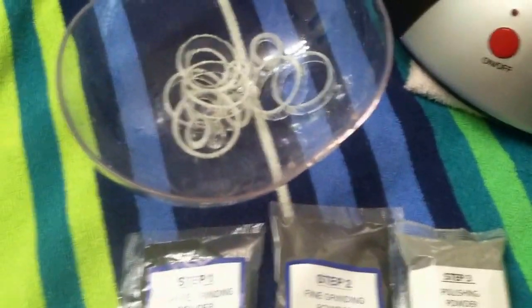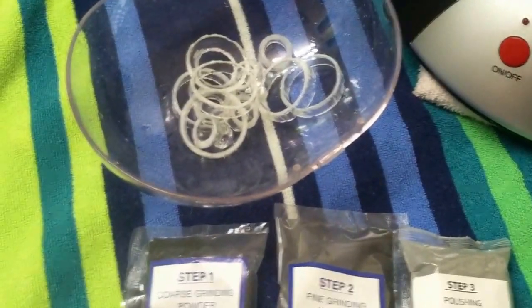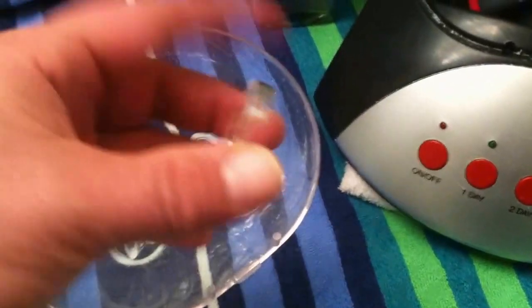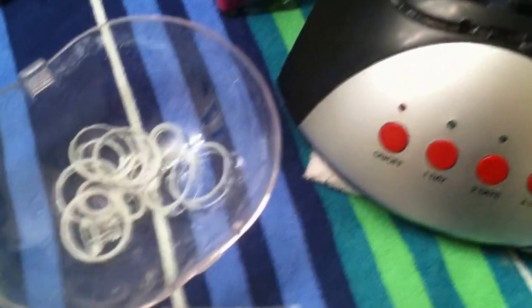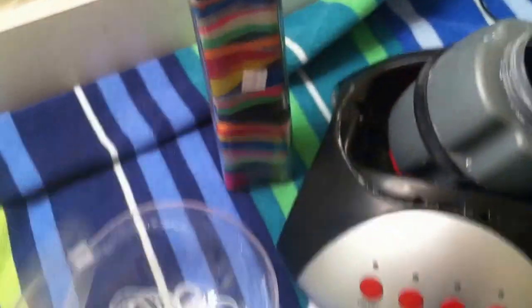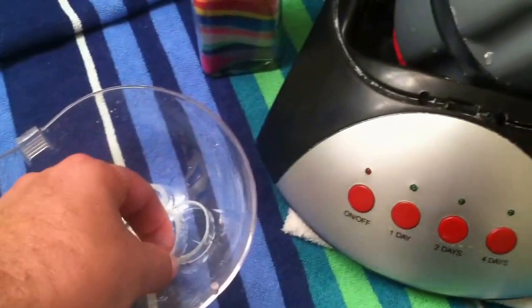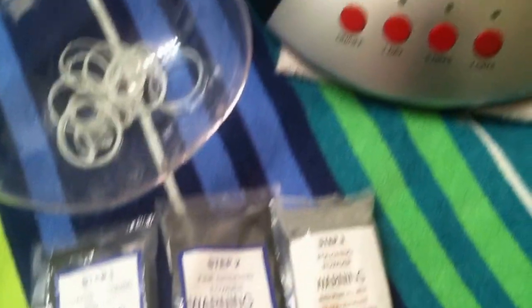Basically what these do is the first grinding will wear down most of the sharp edges. The fine grinding will get it down to about this sea glass consistency, and then if you wanted to bring it back to its original see-through shine, then you'd use a polishing type powder.